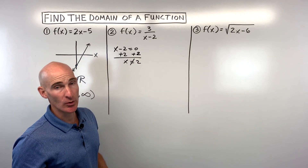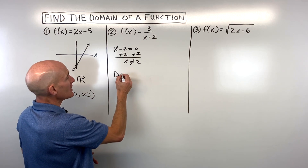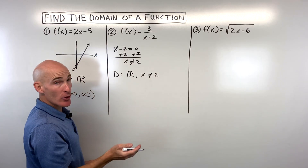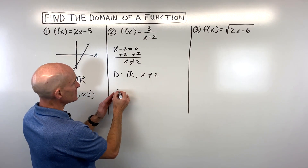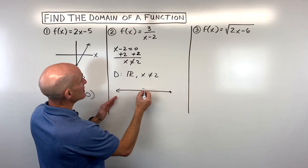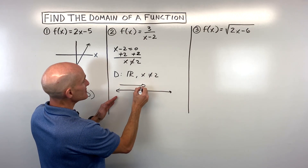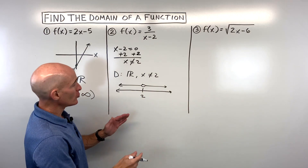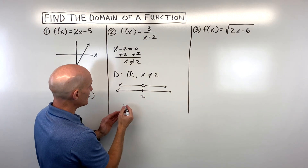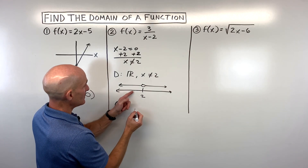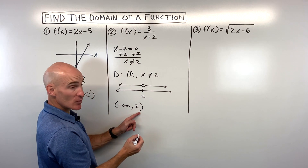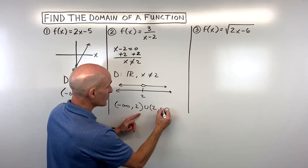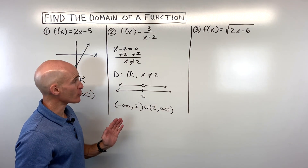So we really don't want x to be two. When you write your domain, you could say it's all real numbers but x cannot be two. Another way to do it in interval notation — I like to think about the number line. Here's two; it can be all numbers to the left, all numbers to the right, but it has to skip over two. Working from left to right: negative infinity all the way to two, not including two, we use parentheses. Then from two, not including two, all the way to positive infinity — infinity you can never reach, so those are always parentheses.